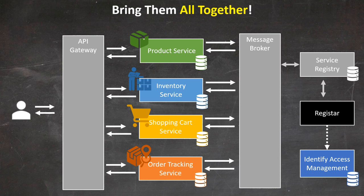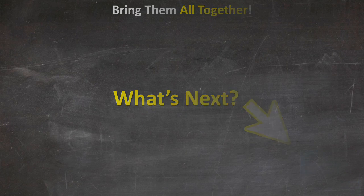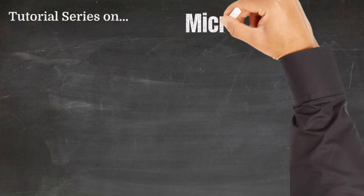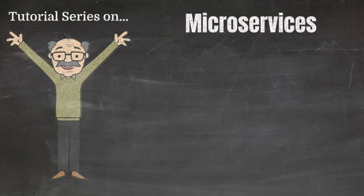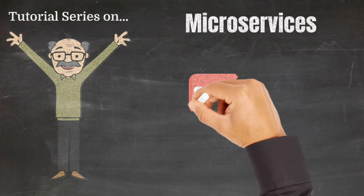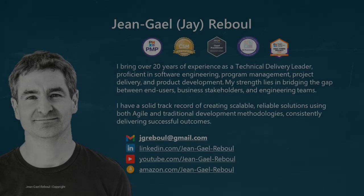In our next hands-on tutorial, we'll complete the implementation of our Identity and Access Management microservice, leveraging JWT and Spring Security. That's it for today, but there's plenty more coming. Please stay tuned and subscribe if you'd like to get notified when the next tutorial is published. See you soon.